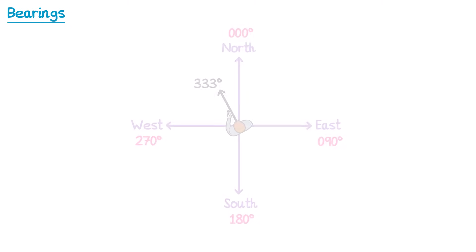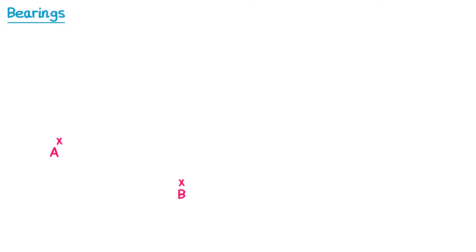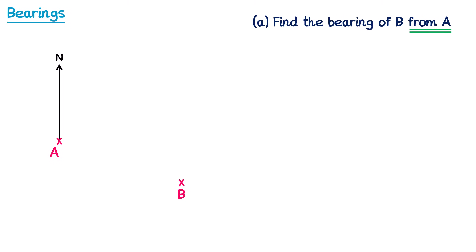Let's have a look at how we can use this in some examples. So let's say we take two points A and B. In the question, we could be asked to find the bearing of B from A. Remember when it says from A, this means we need to imagine we're stood at A, and we're going to turn clockwise from north until we face B. So what we do is draw a north line at A, then draw a straight line connecting A and B together, and we imagine we turn from north until we're facing B, which means we need to turn through this angle here. So all we need to do is measure that angle, and that will be our bearing.